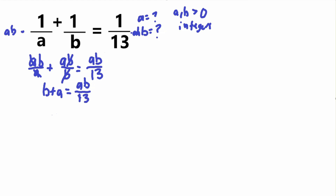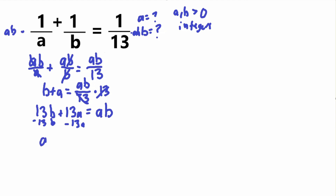Now we want to get rid of the denominator on the right side, so let's multiply both sides by 13. The 13s cancel on the right, and on the left side we get 13b plus 13a is equal to ab. Now I'm going to put everything on one side by subtracting 13b and 13a, which gives us ab minus 13b minus 13a is equal to zero.